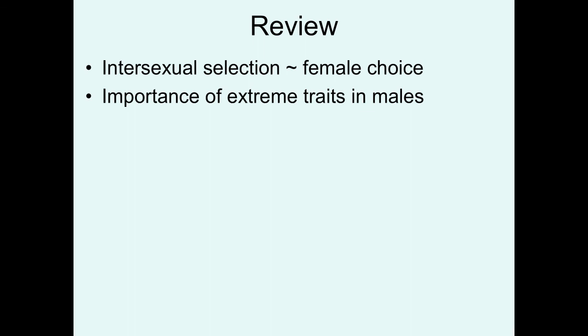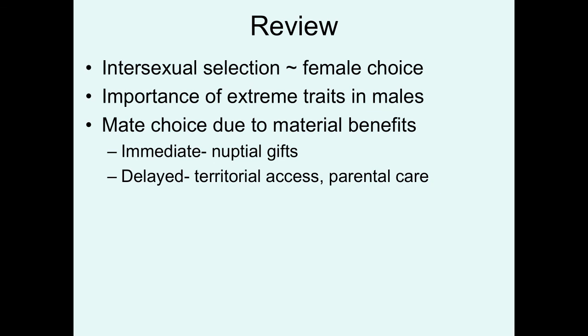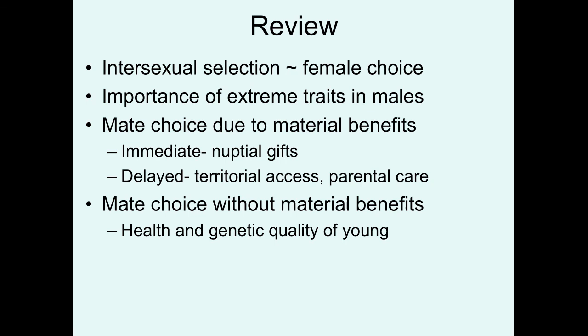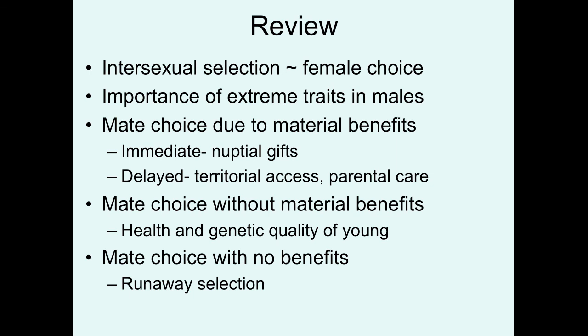In review, in this lecture we focused on intersexual selection, which typically is associated with female choice among males for potential mates. In most cases, males with the most extreme traits are the ones chosen. Male choice can be due to differences in the ability of males to provide material benefits — immediate nuptial gifts, or delayed benefits in the case of territories of different quality or parental care. We also talked about situations where females choose among mates despite the fact that the mates aren't providing any material benefits — in this situation, they're just trying to mate with the healthiest male that can provide the highest quality genes. And finally, we talked about situations where females may choose males based on arbitrary criteria that have evolved through the runaway selection process.